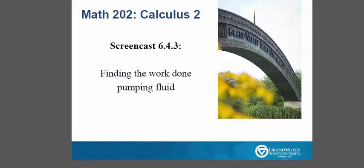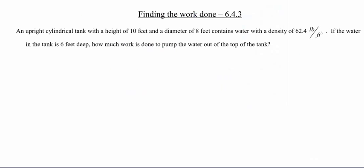Hello, and welcome to a screencast today about finding the work done pumping fluid. We have an upright cylindrical tank with a height of 10 feet and a diameter of 8 feet, and it contains water with a density of 62.4 pounds per feet cubed.